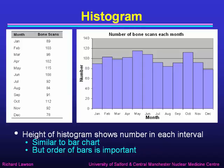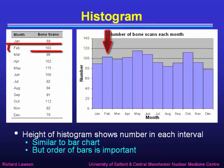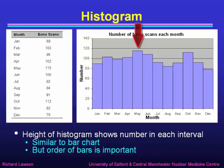One way of describing data is as a histogram. Here the height of each histogram bar shows the number in each interval. The intervals represent the months — January, February, March — and the heights of the bars the number of bone scans performed in that month: 89 in January, 103 in February, and so on. This is very similar to the bar chart we looked at earlier, but in this case the order of the bars is important, because the order represents the time sequence from January through to December. From this sort of display it's easy to see in which month we did most bone scans — in May — and in which month we did fewest — in December.